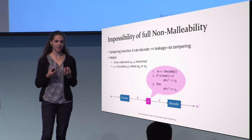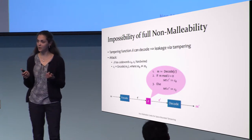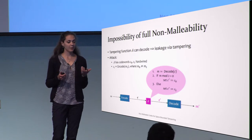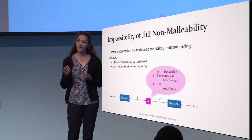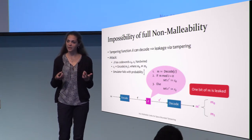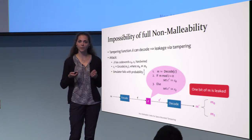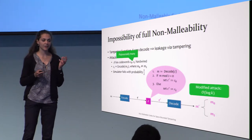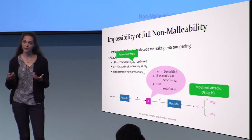Why can we not achieve full non-malleability? Here is an attack: suppose the tampering function has hardwired two different codewords C0 and C1, encodings of two different messages. It decodes to learn message M, looks at the last bit, and depending on that bit tampers to either C0 or C1. In this way, exactly one bit of the original message is leaked. The simulator cannot simulate this because it doesn't know M and can only guess the last bit. Furthermore, this attack can be extended: with polynomially many hardwired codewords, logarithmically many bits of the original message can be leaked.